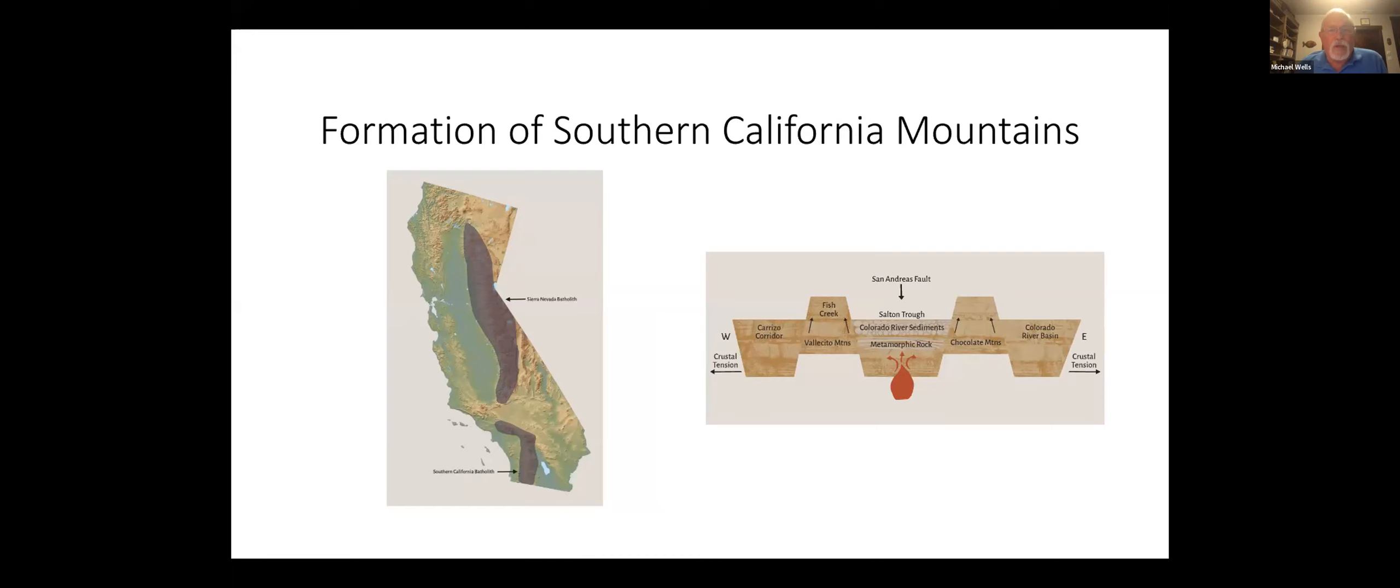We talked about the formation of the Southern California mountains because of crustal extension, and also because of plutons that were formed during and before the Pleistocene underneath Southern California. One is the Sierra Nevadas, and this is the Southern California batholith that underlies the coastal mountains.